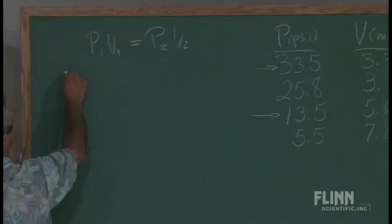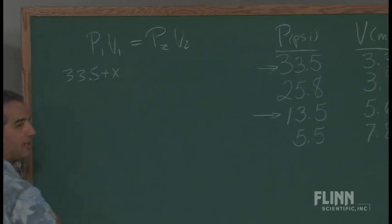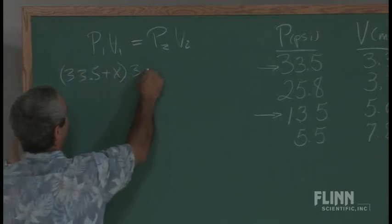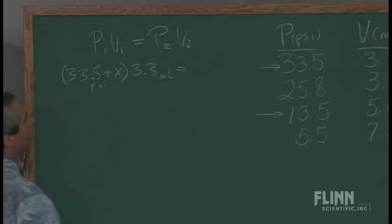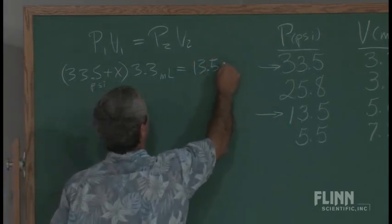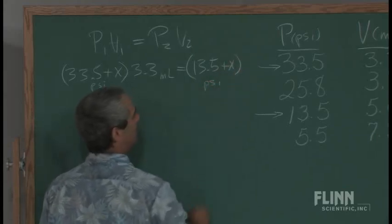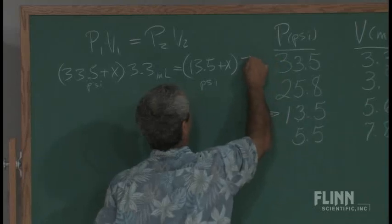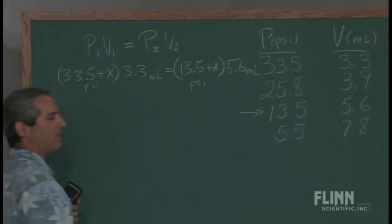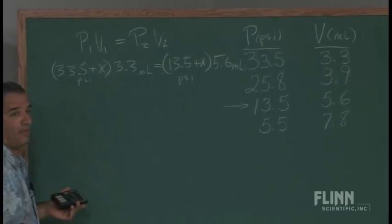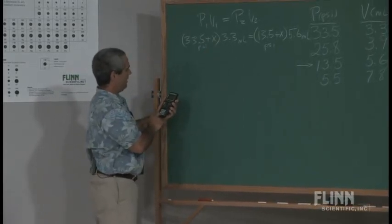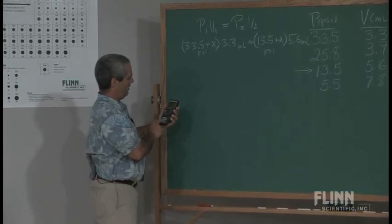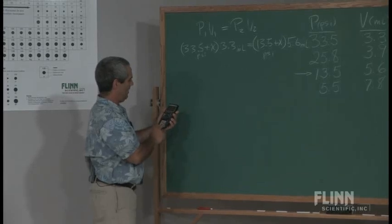If our relationship is correct, the Boyle's Law relationship is P1V1 equals P2V2, then I should be able to set up an equation with x in there as our unknown, x being atmospheric pressure that gets added to each of these two, and we'll solve for it. So we have 33.5 plus x, that's our unknown, times the initial volume of 3.3. I should put psi as the unit here, milliliters. I always like to put the units in there. And the other side we're going to have that set equal to the second pressure I'm picking, this one down here: 13.5 plus x, again that's in psi, times its volume 5.6 milliliters.